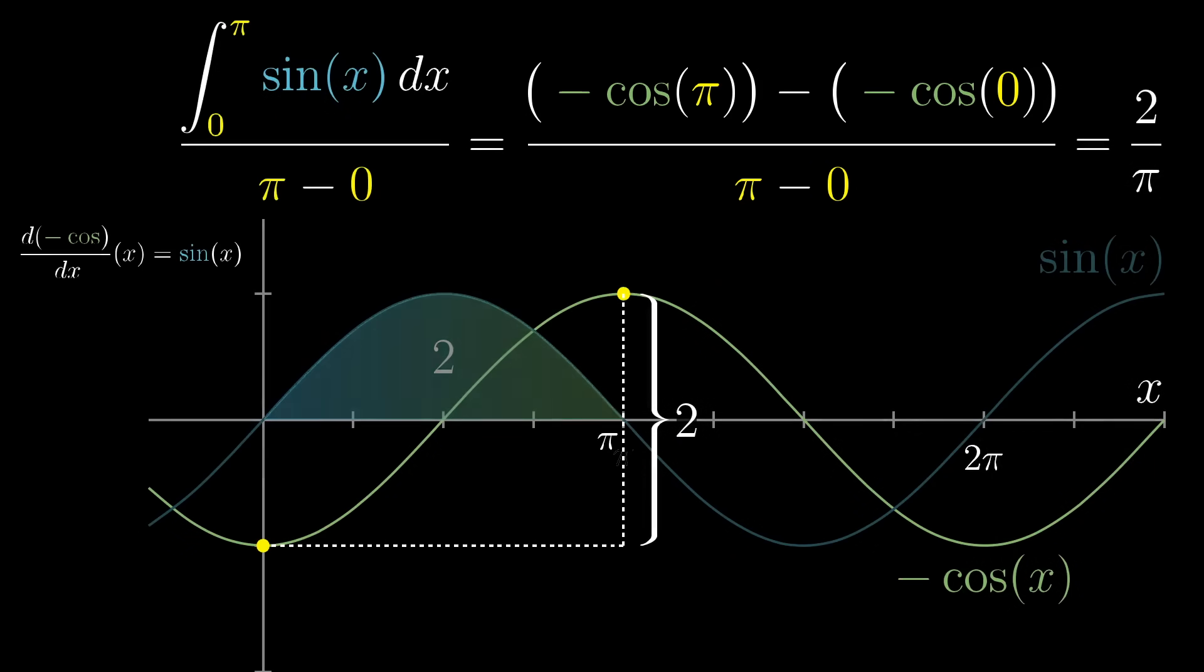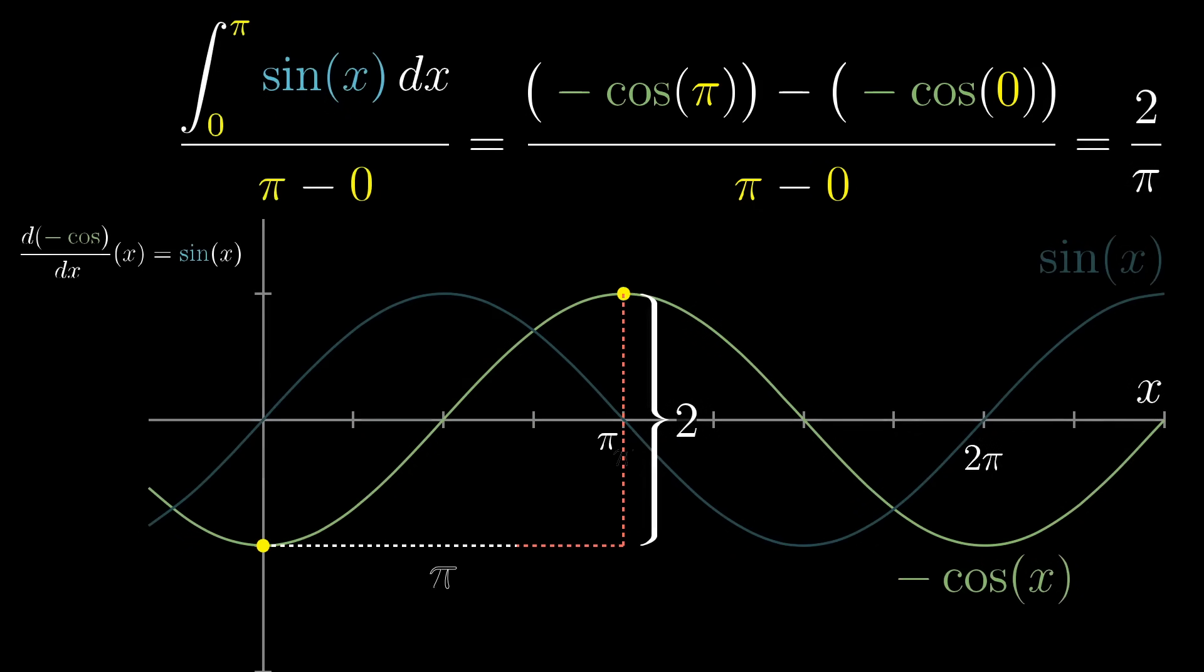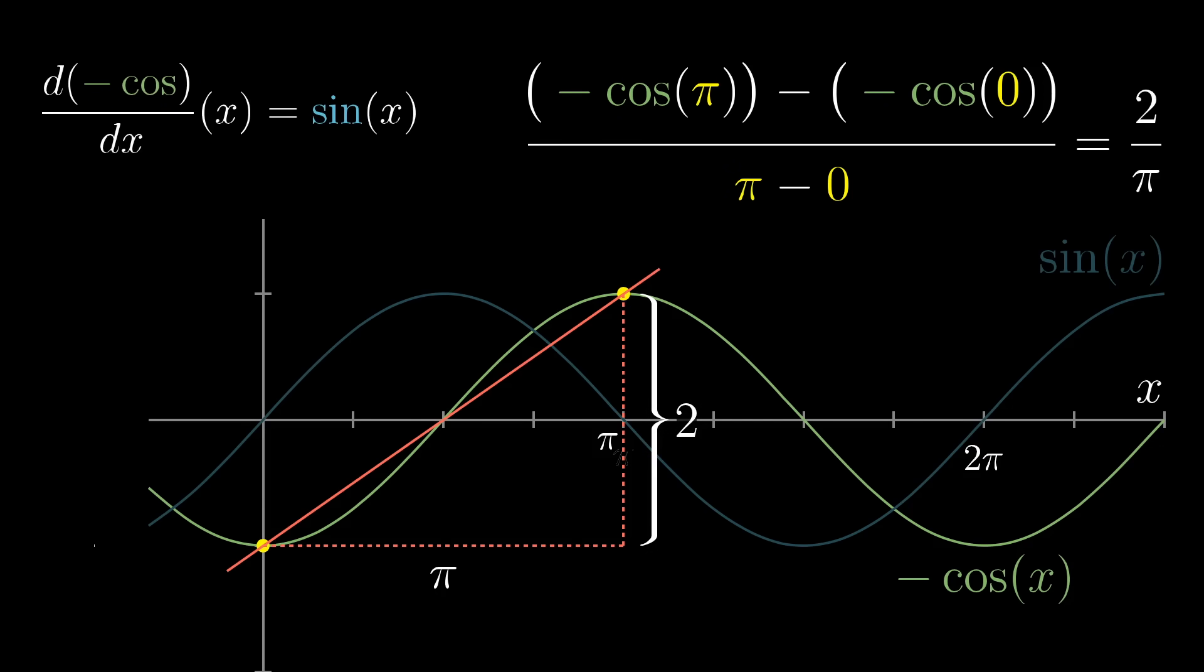And another way to think about that fraction is as the rise over run slope between the point of the antiderivative graph below zero and the point of that graph above pi. And now think about why it might make sense that this slope would represent an average value of sine of x on that region.